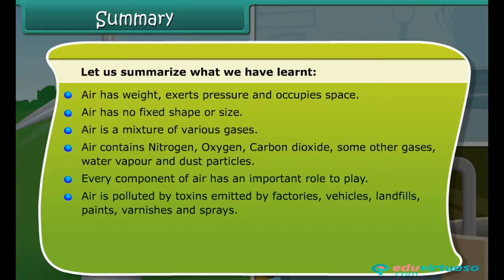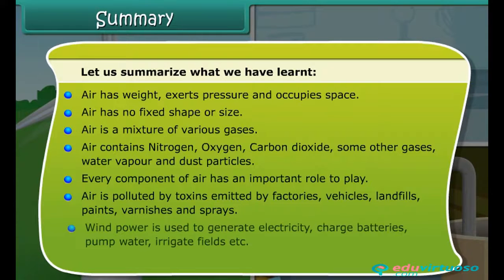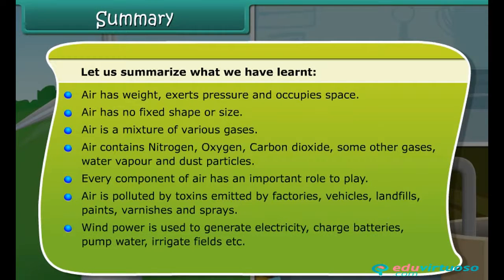Air is polluted by toxins emitted by factories, vehicles, landfills, paints, varnishes, and sprays. Wind power is used to generate electricity, charge batteries, pump water, and irrigate fields. Wind energy is pollution free.